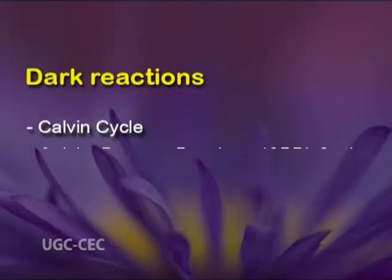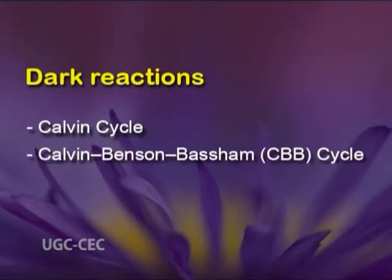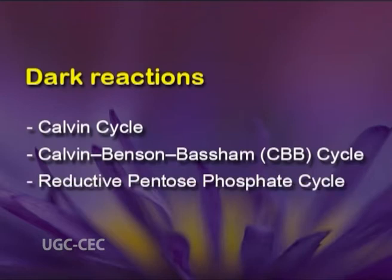Dark reactions are known by several names such as the Calvin cycle, or the Calvin-Benson-Bassham or CBB cycle, or reductive pentose phosphate cycle, or C3 cycle. Dark reactions are a series of biochemical redox reactions that take place in a cyclic form in the stroma of chloroplasts in photosynthetic organisms.